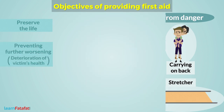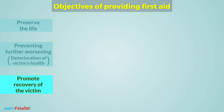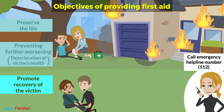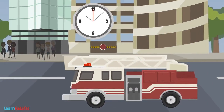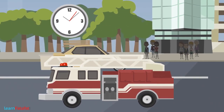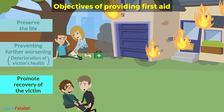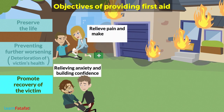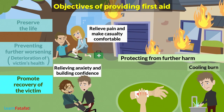The third objective is to promote recovery of the victim. You should call the emergency helpline number for professional medical help. While waiting for medical facility to arrive, you should promote recovery by relieving anxiety and building confidence, attempting to relieve pain and make the casualty comfortable, protecting from further harm, cooling the burn, and stopping the blood flow.